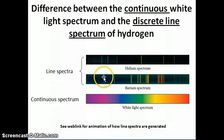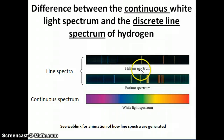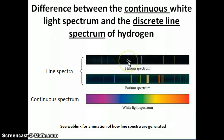We're particularly curious about these line spectra because they come from specific elements — helium, barium, and so on. That means the light is emitted as a result of some changes in the electrons of those atoms. So if we can model this emission and make predictions of how these light waves come about, that model will give us an understanding of how atoms and electrons are composed inside an atom.